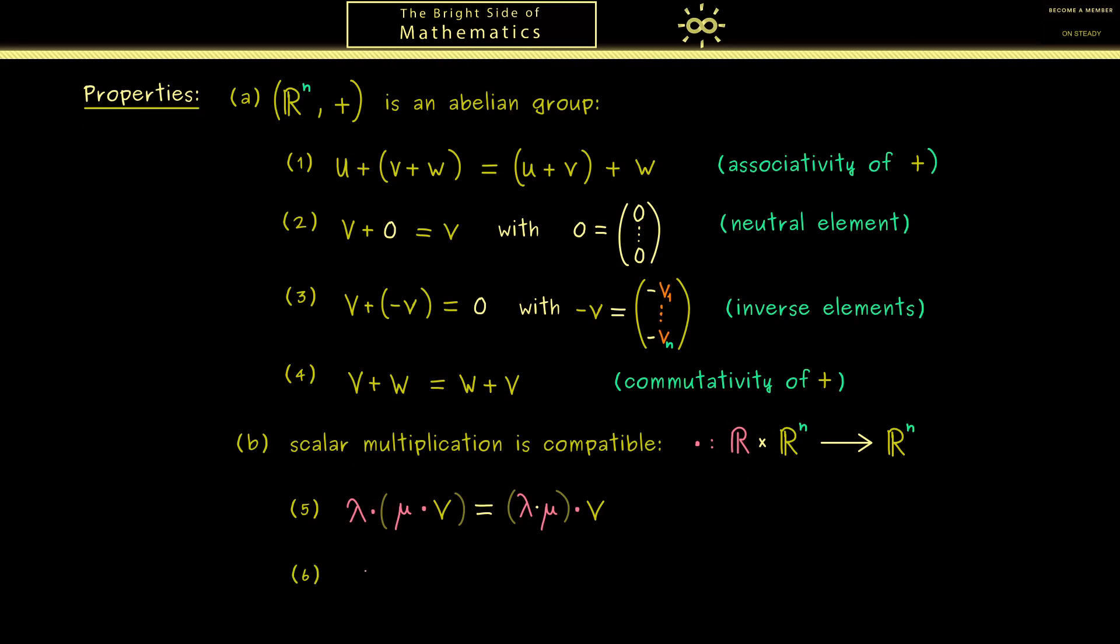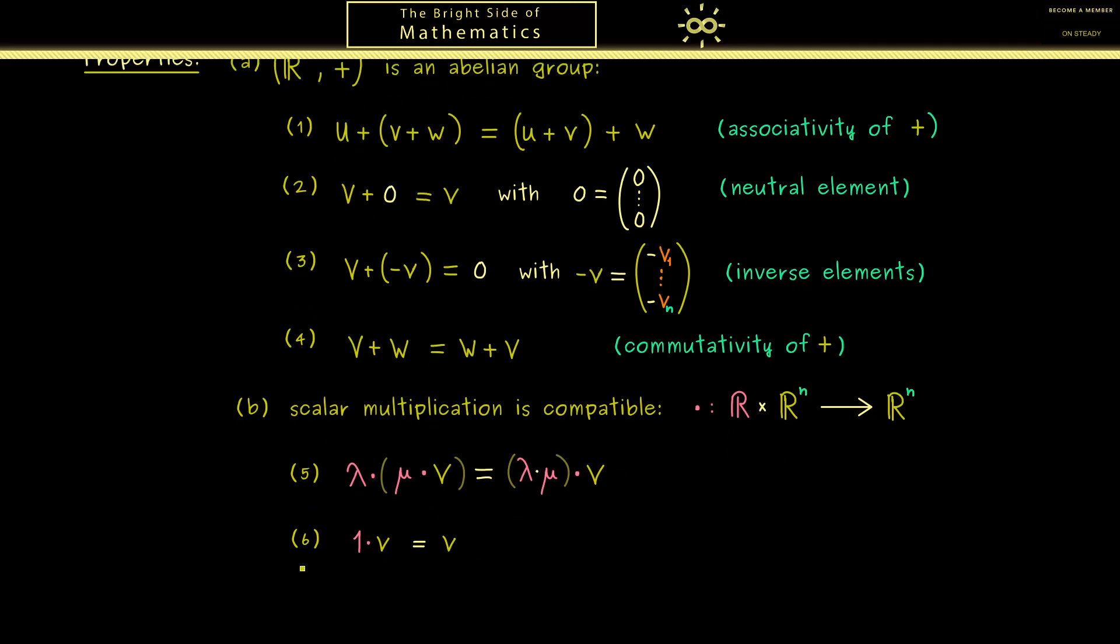Then the next compatible rule I want is that when I scale with 1, we don't change anything. So 1 times v is v again. Of course, these two rules we immediately see for our scalar multiplication in R^n. And with this, only two properties are missing.